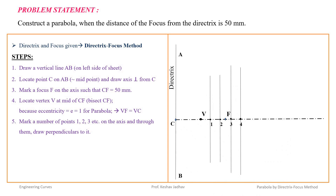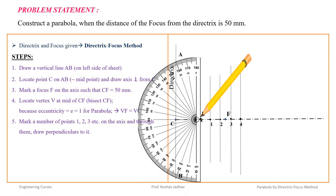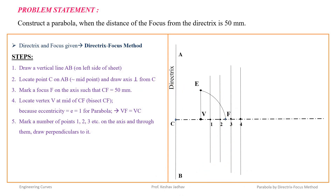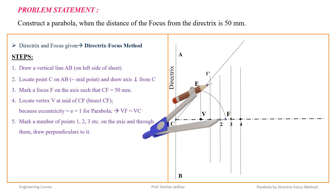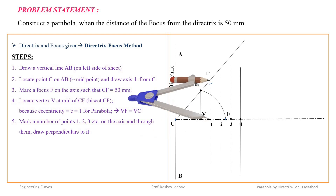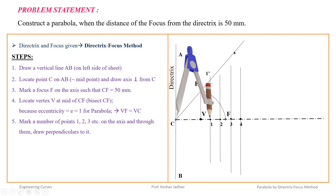Similar to the procedure for drawing ellipse and hyperbola by the directrix focus method, we could draw a vertical line from V, mark point E such that VF equals VE, then draw a line CE. In the compass, take distance 11' and with focus as center draw an arc on line 1. However, the distance 11' equals distance C1 because the slope of line CE is equal to 1.